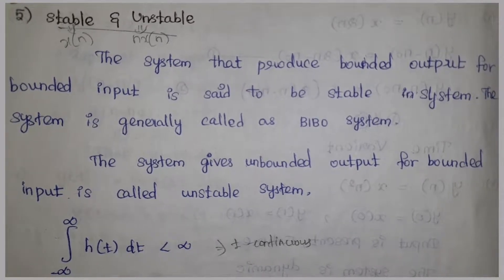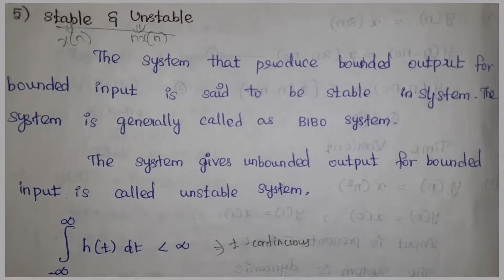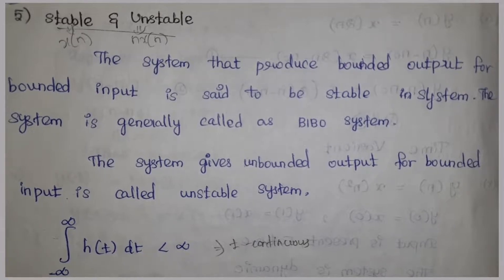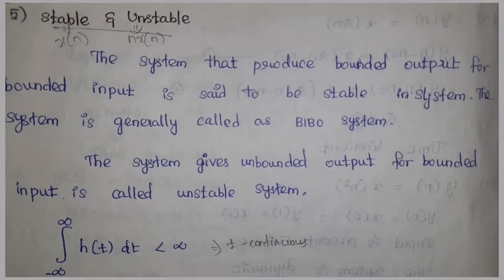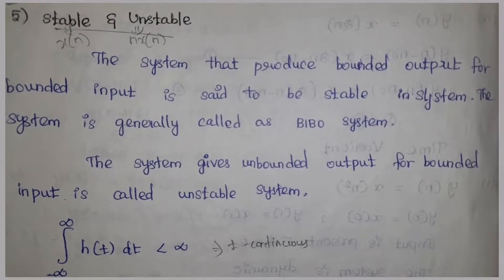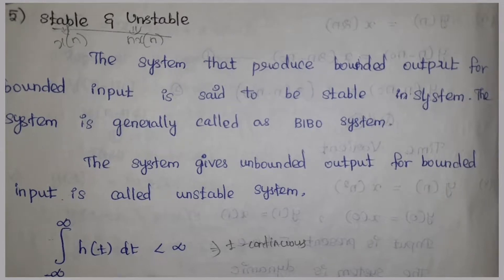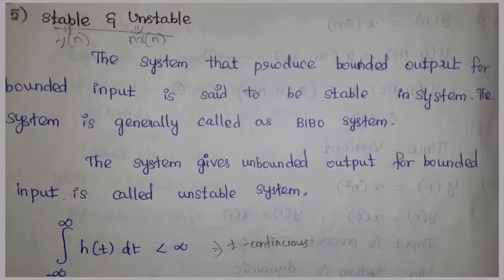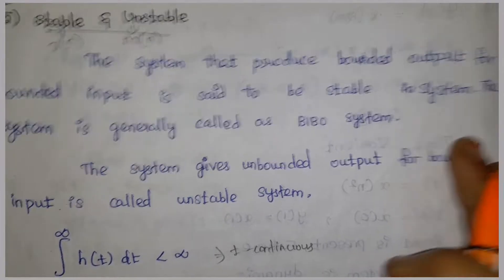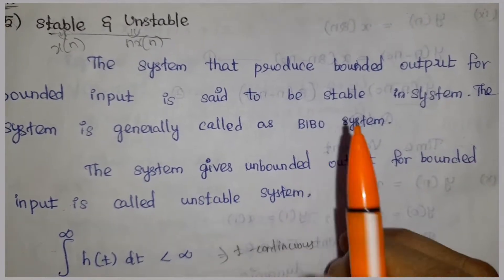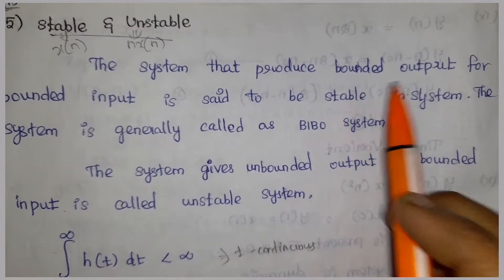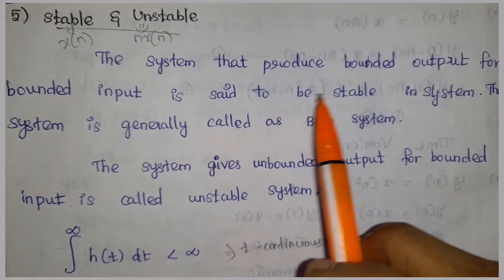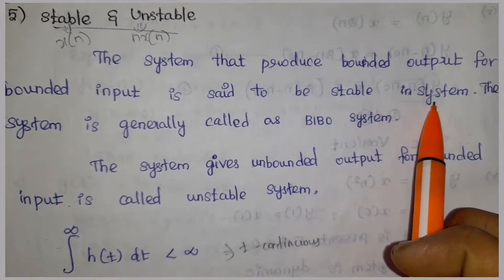Hi friends. In this DSP series, next topic is Stable and Unstable Systems. What is meant by a Stable System? The system that produces bounded output for bounded input is said to be a stable system. The system is generally called BIBO — Bounded Input, Bounded Output.